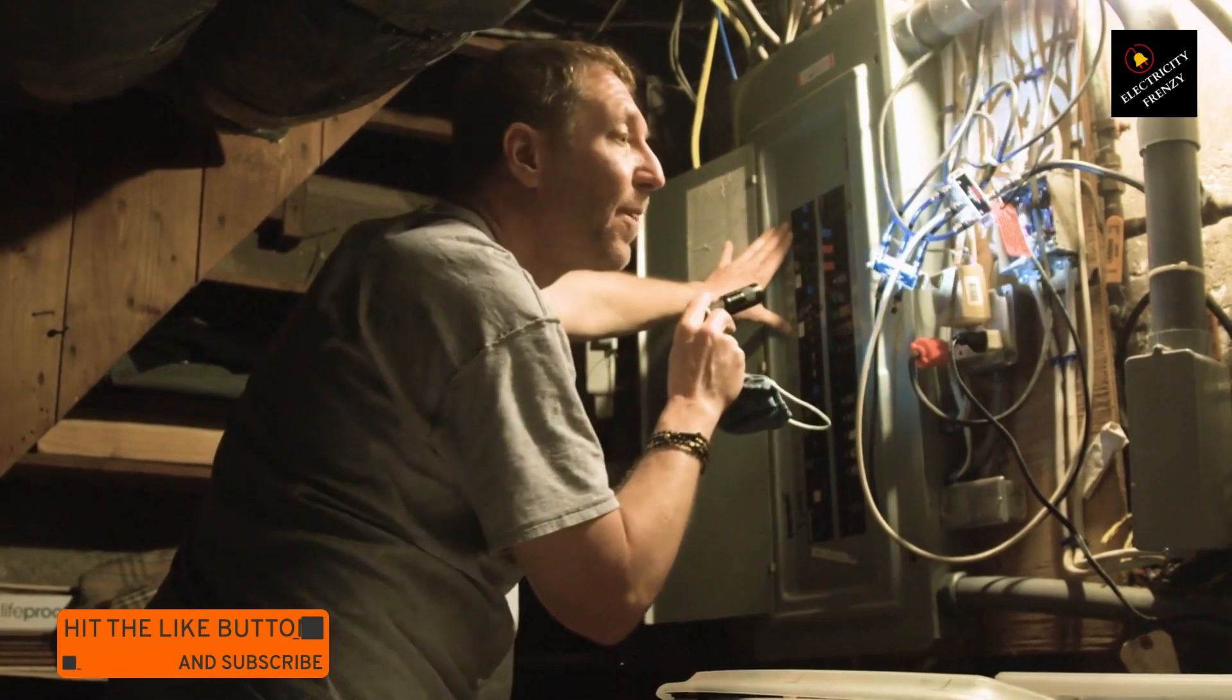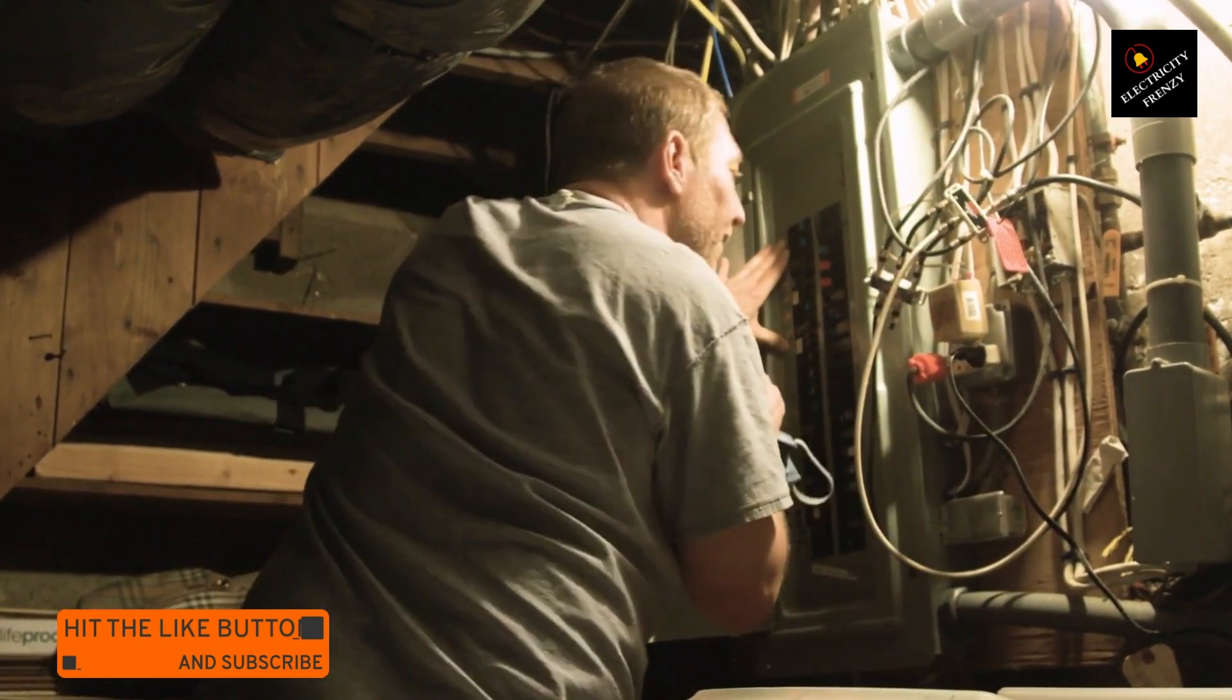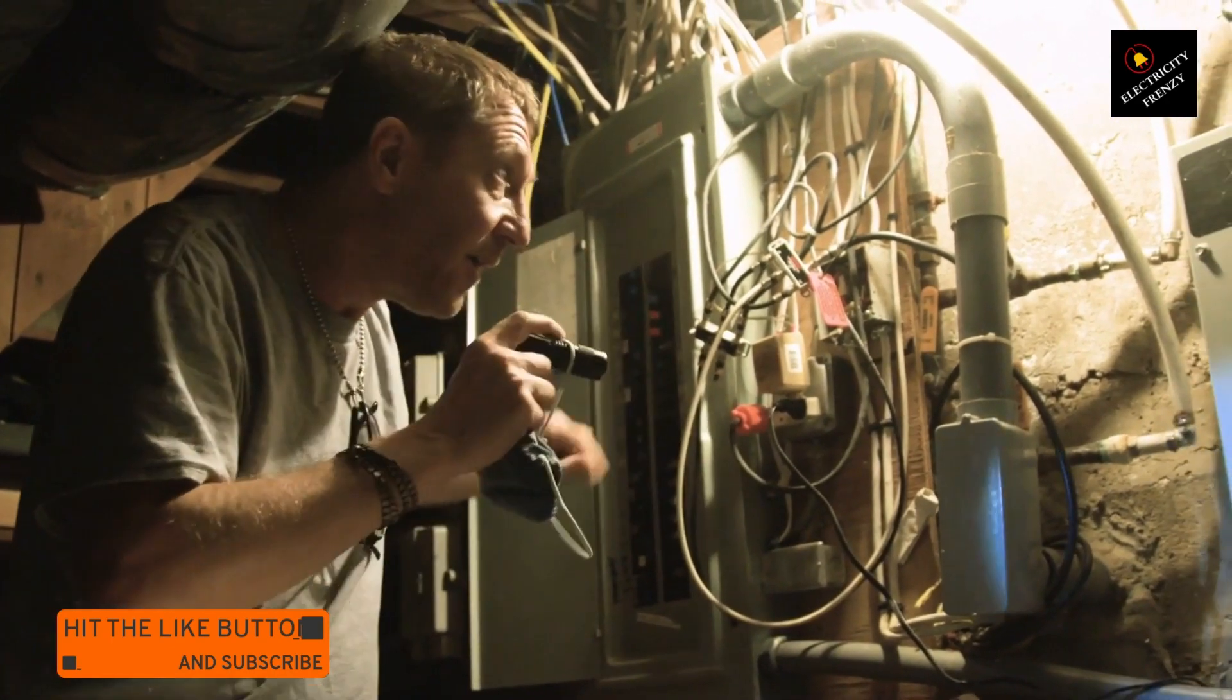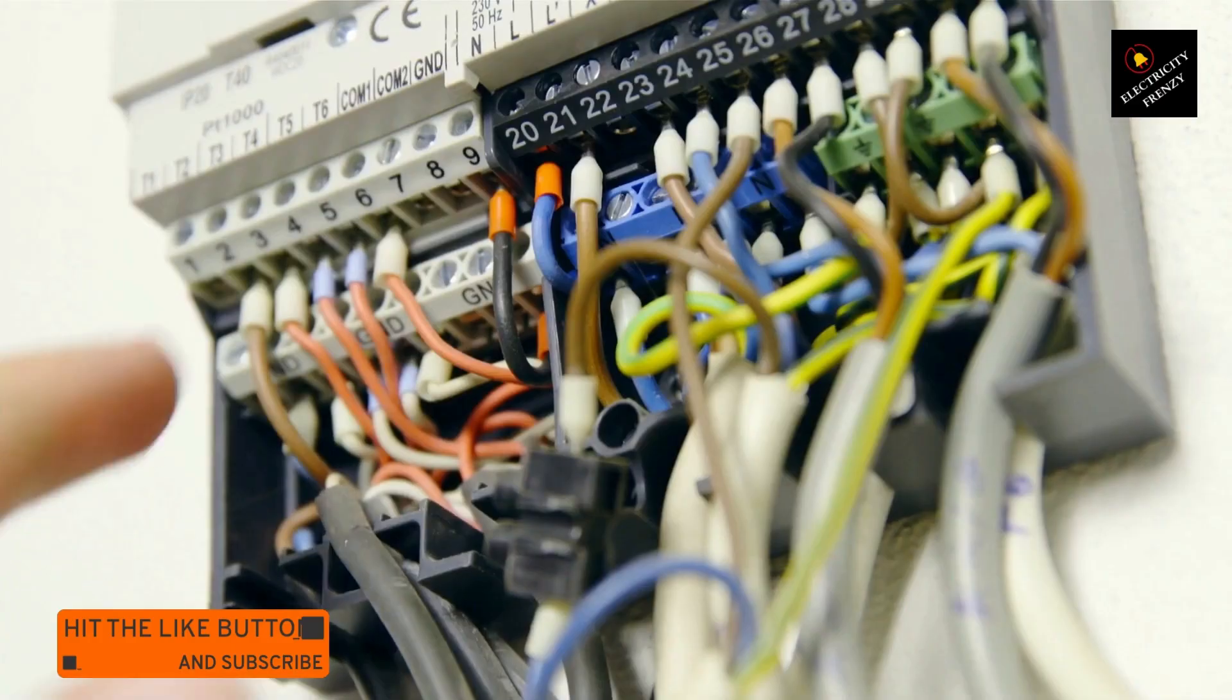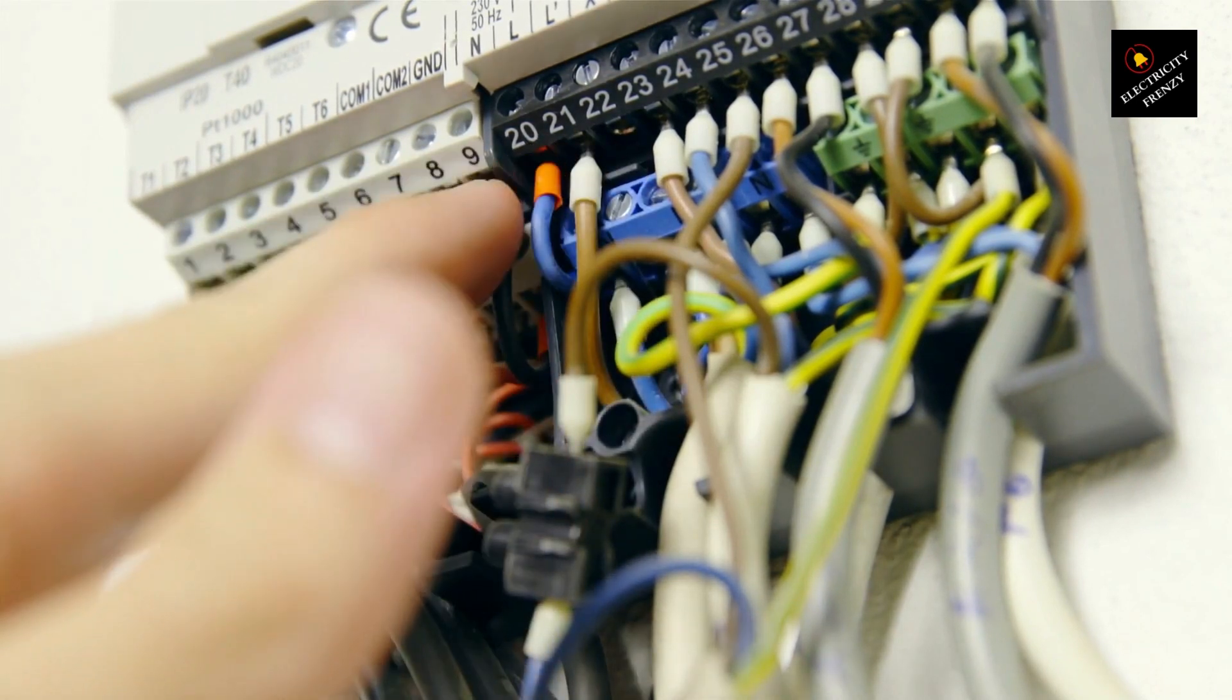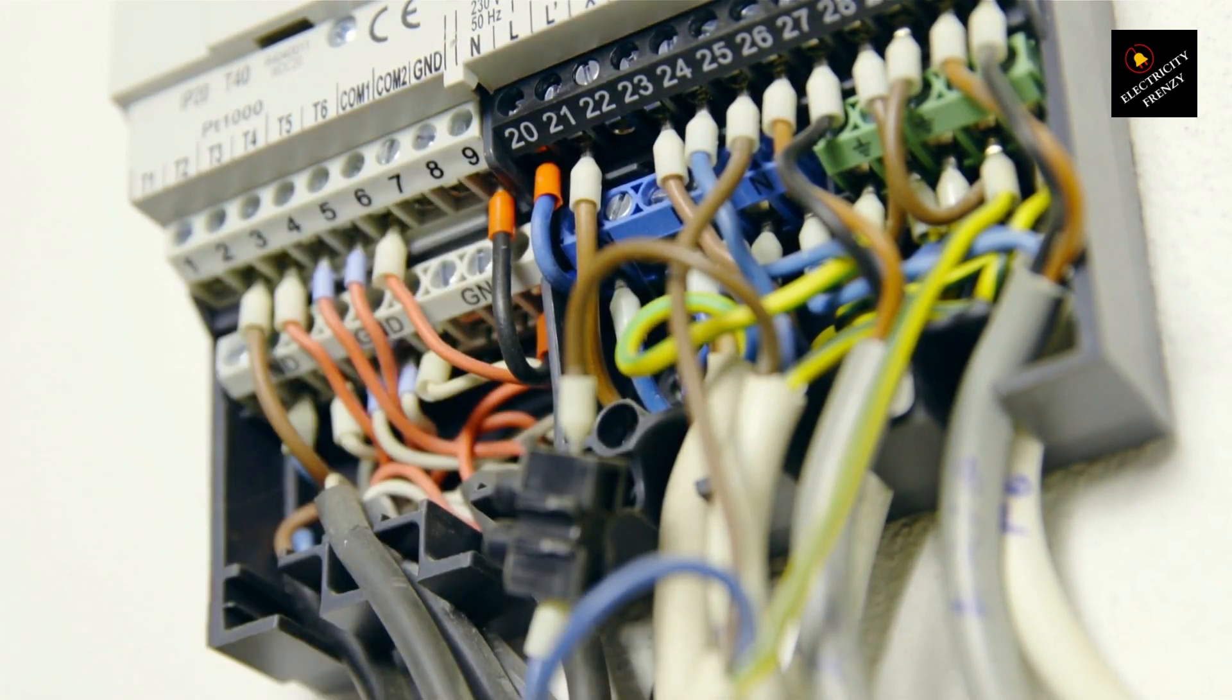Overheating dryer. Malfunctioning components within the dryer, such as the heating element, thermostat, or motor, can cause the dryer to overheat and draw more current. As the appliance draws more current than the circuit can handle, the circuit breaker trips to prevent overheating and potential fire hazards.